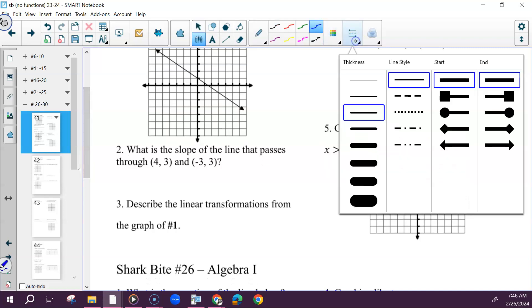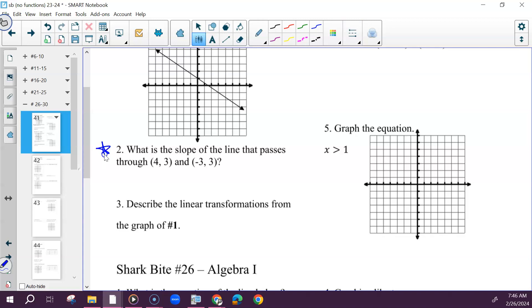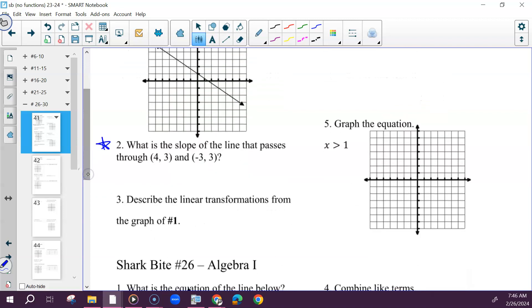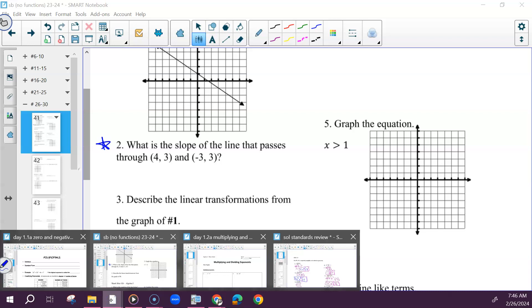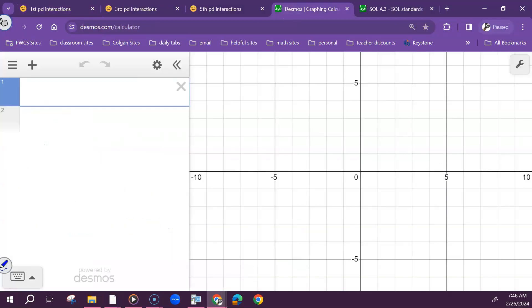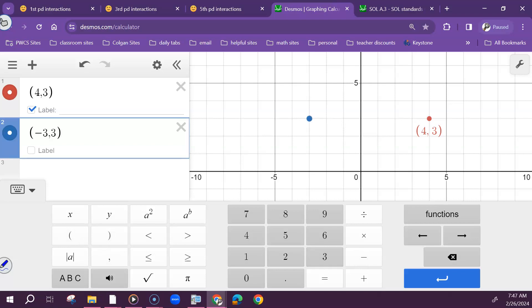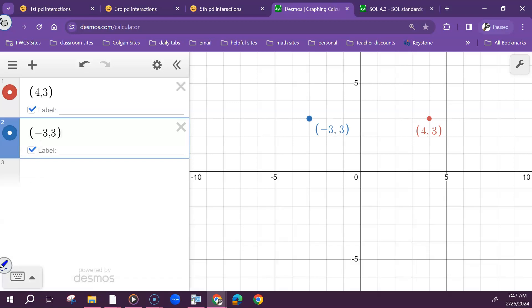So two can be done in Desmos, three we'll talk about, four we could check in Desmos. But with number two, if I put in these points, four, three, and negative three, three, I see that these points fall on a horizontal line, horizontal lines have slopes of zero.